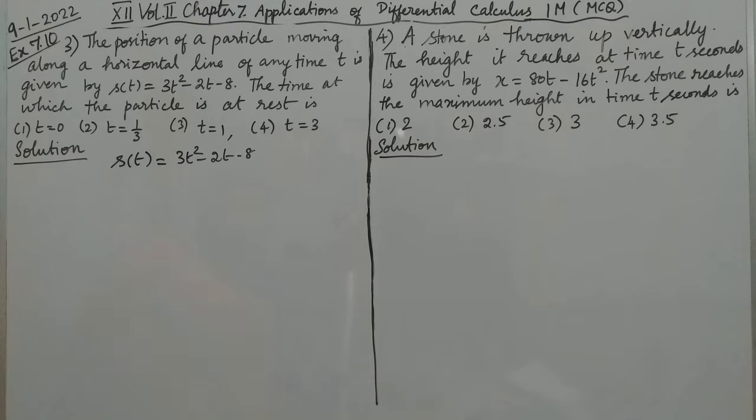Hello students, Exercise 7.0, problem number 3. The position of a particle moving along a horizontal line at any time t is given by s(t) = 3t² - 2t - 8. Find the time at which the particle is at rest.